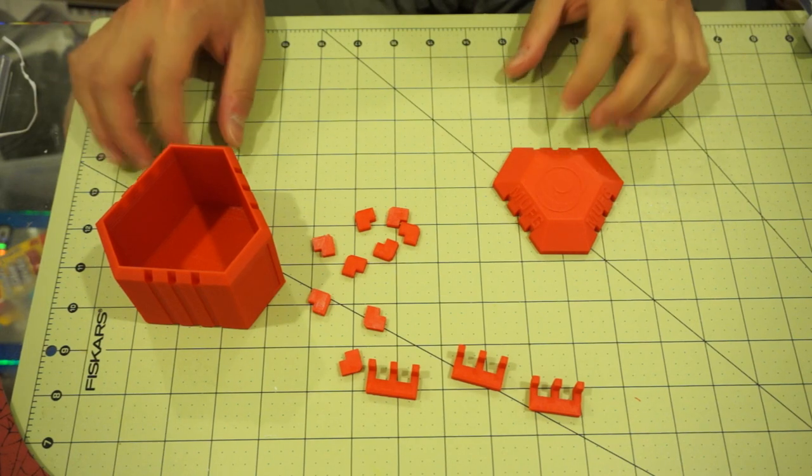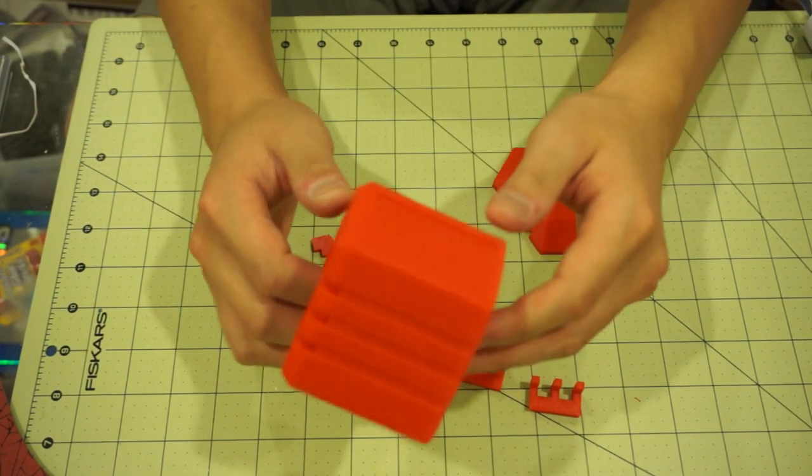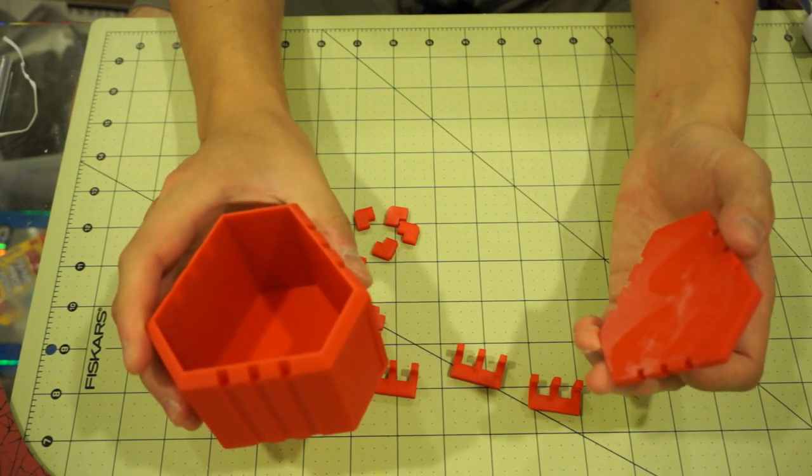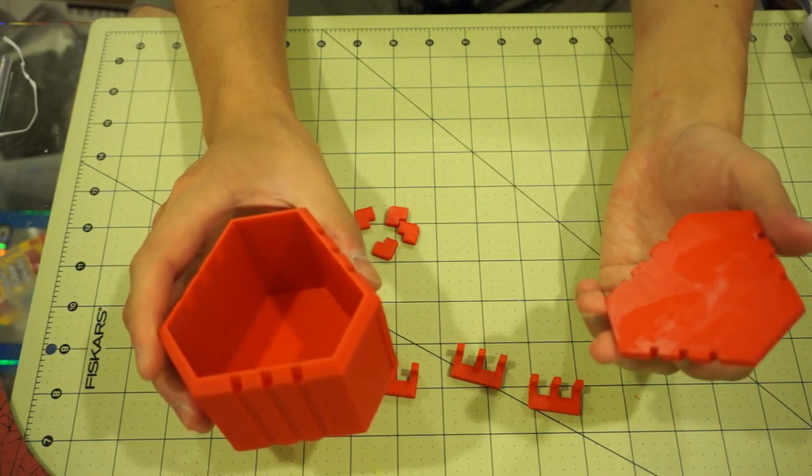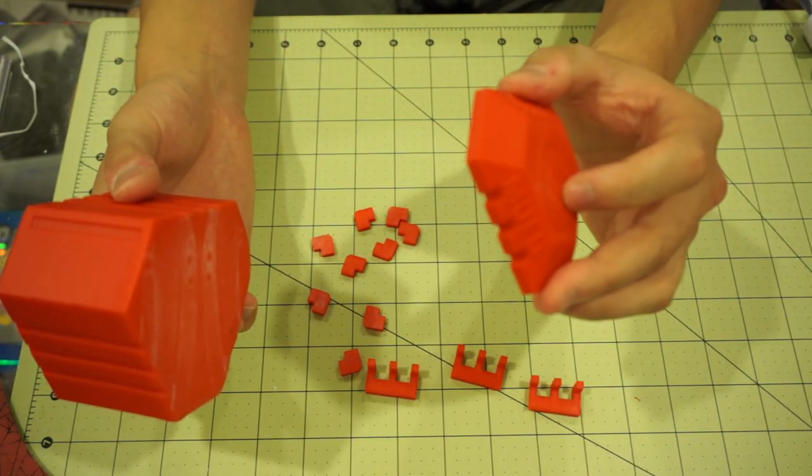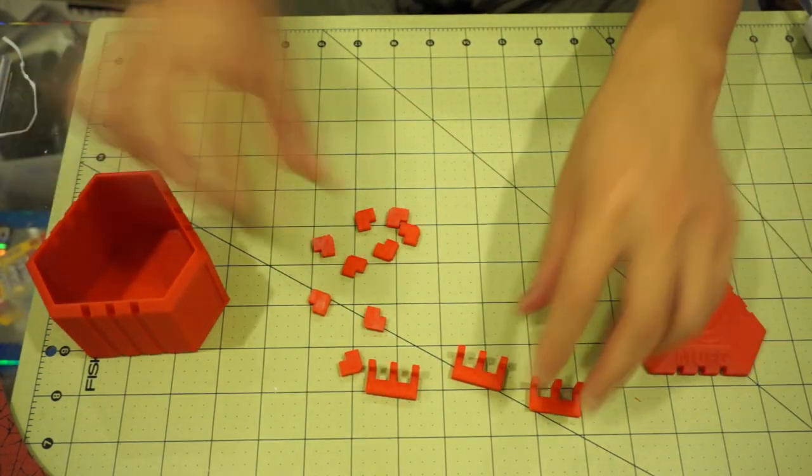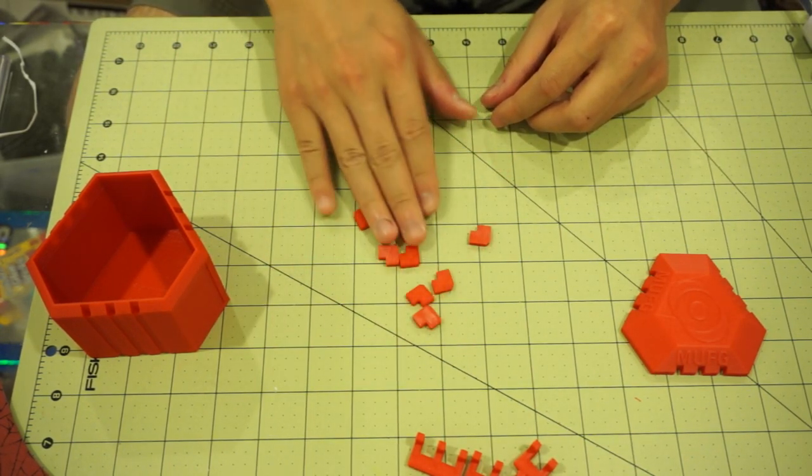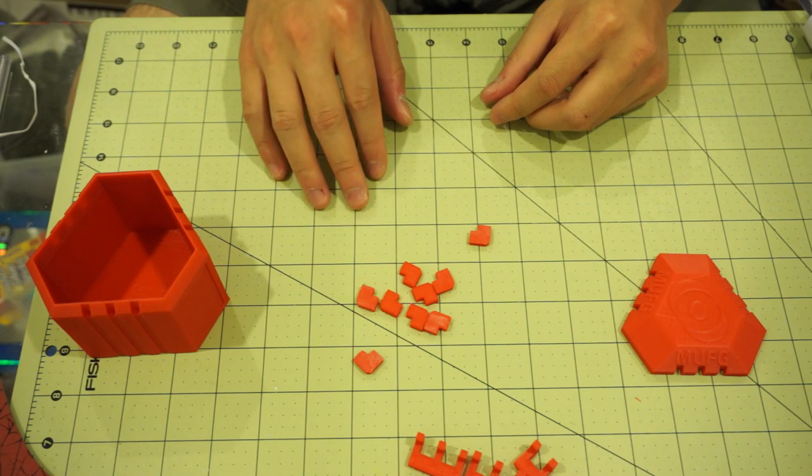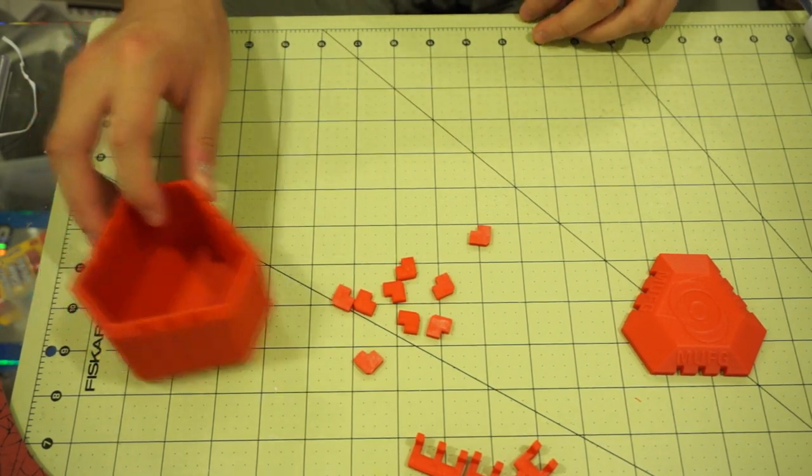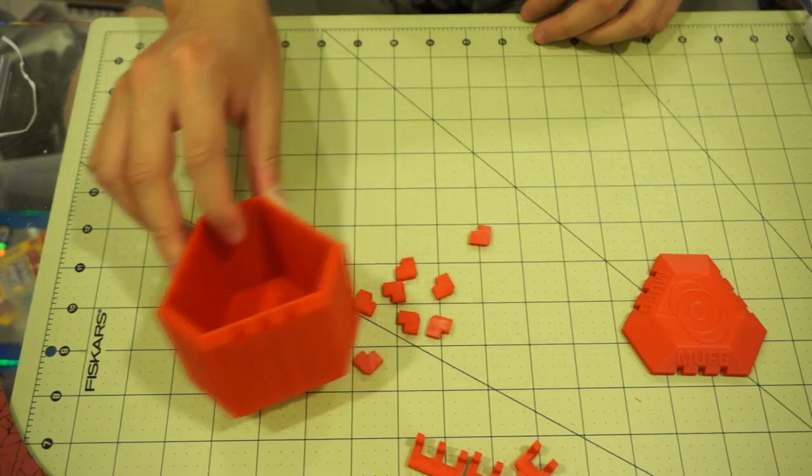Alright, so everything's been printed out. This piece took 17 hours. This whole project took about 21 to about 22 hours. Somewhere around there. This took about two and a half hours, 17 hours. These three pieces took about an hour and a half. And then this took roughly about the same time. Hour, hour and a half-ish. So the only thing left to do now is to assemble this whole thing.